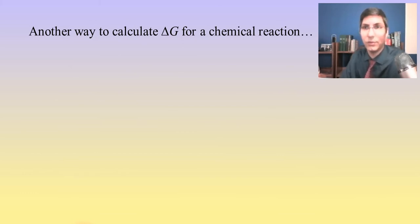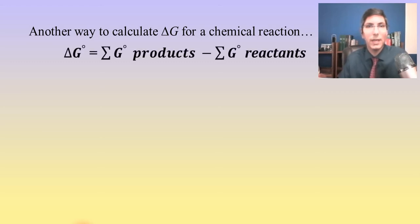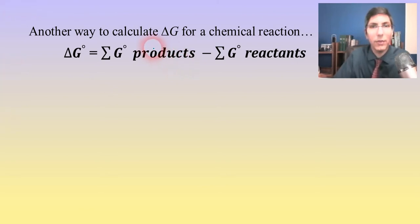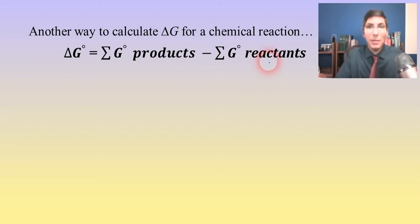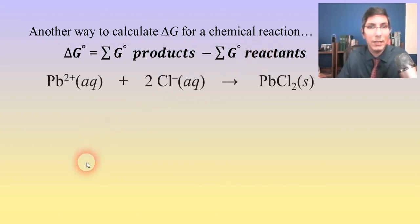There is another way to calculate delta G for a chemical reaction. It's the sum of all the Gibbs free energies for the products minus the sum of all the individual Gibbs free energy values for the reactants. This is done exactly the same way as we calculated delta H in lesson 15 and delta S in the previous video.